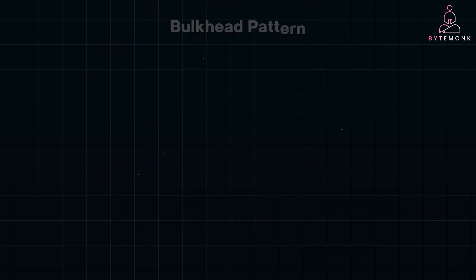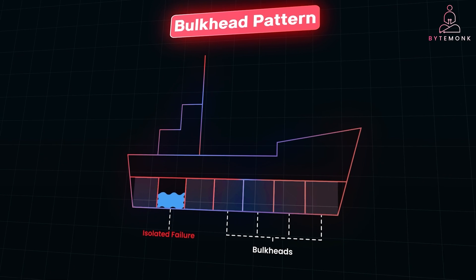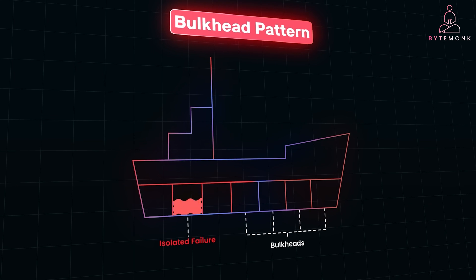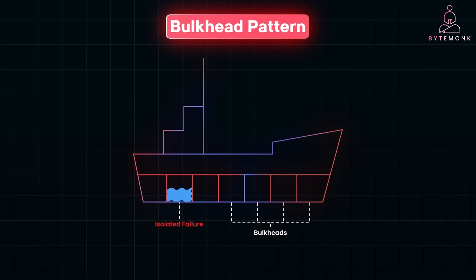Let's talk about bulkheads. Think of a ship with watertight compartments or bulkheads — if one section floods, the bulkhead prevents the water from spreading to other parts of the ship. The bulkhead pattern works the same way in microservices, by isolating services so that if one fails, it doesn't drag down others. For example, you can isolate your user service from your payment service so that if the payment service fails, users can still log in and browse products, ensuring critical parts of your system stay operational even when other services are struggling.